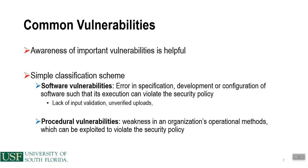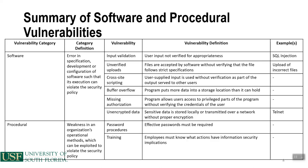Awareness of important vulnerabilities is helpful, and there's a simple classification scheme. Software vulnerabilities involve errors in specification, development, or configuration of software such that its execution can violate the security policy. Procedural vulnerabilities are weaknesses in an organization's operational methods which can be used to violate the security policy. Software vulnerabilities include things like input validation, unverified uploads, and cross-site scripting, while procedural vulnerabilities refer to things like password procedures.